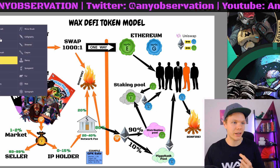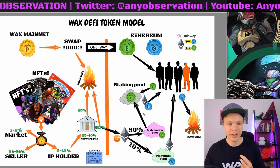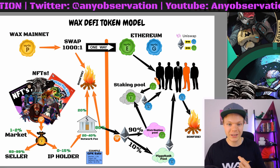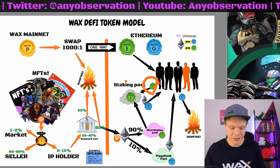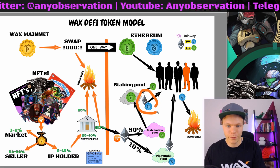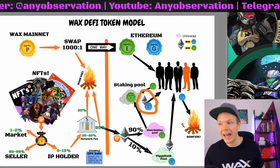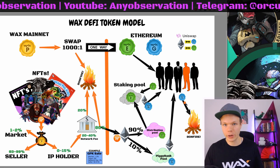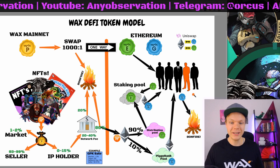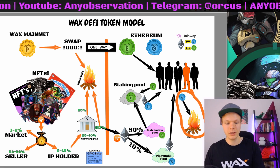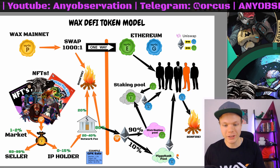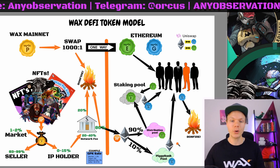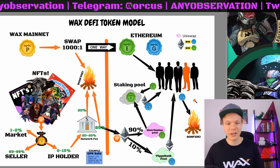So if you stake the WAXE in the staking pool, you will earn Ethereum and you will earn WAXG — two tokens. The WAXG token can then be burnt. If you burn it, you will earn Ethereum from another source. So you will earn your tokens but then the WAXG token will be gone.